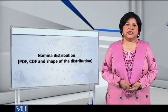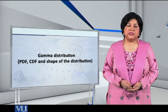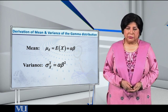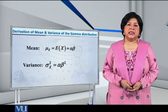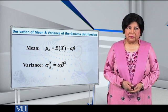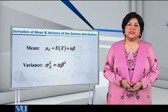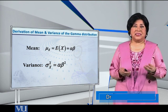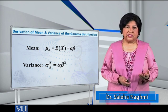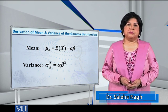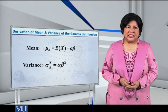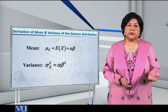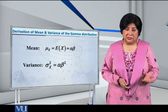Dear students, I would like to discuss with you the mean and the variance of the Gamma distribution. For a Gamma distribution with shape parameter alpha and scale parameter beta, the mean is equal to alpha times beta and the variance is equal to alpha times beta squared. These are elegant results — if you multiply alpha and beta you get the mean, and alpha times beta squared gives you the variance.